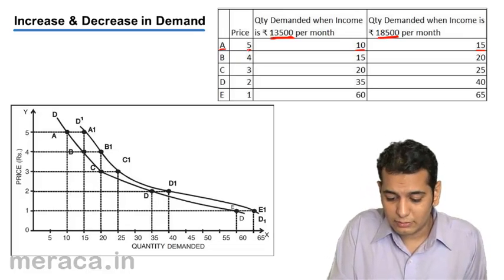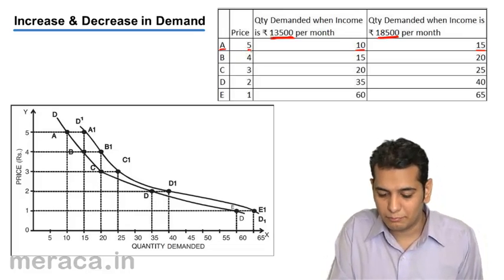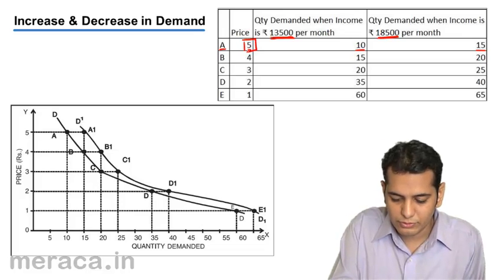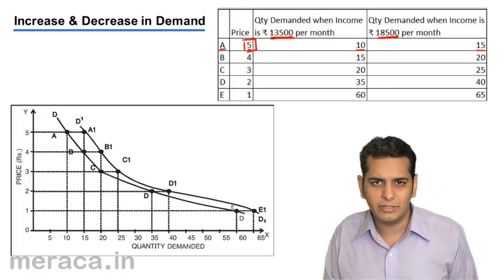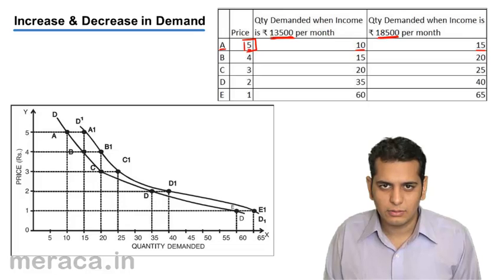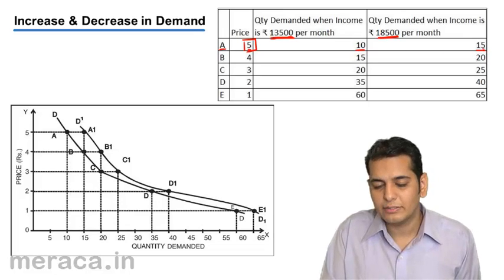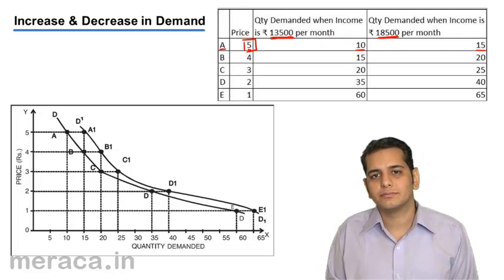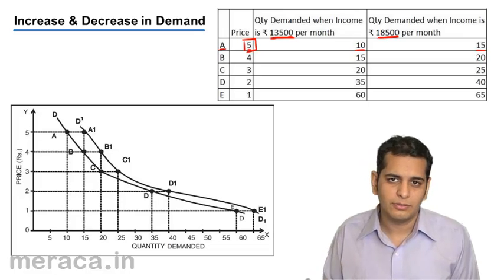Please note that the price is not changing here. Price is constant at Rs. 5 at both income levels. Yet, the quantity demanded is changing. There is a change in the overall demand.